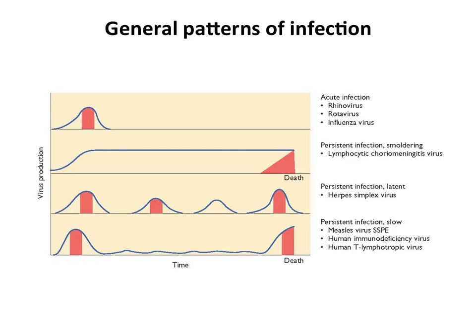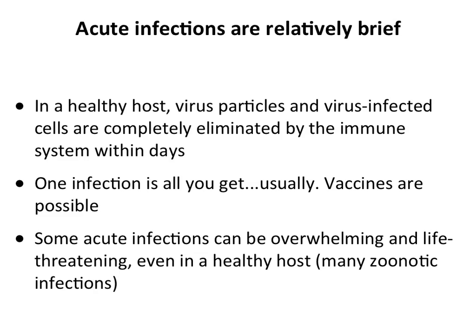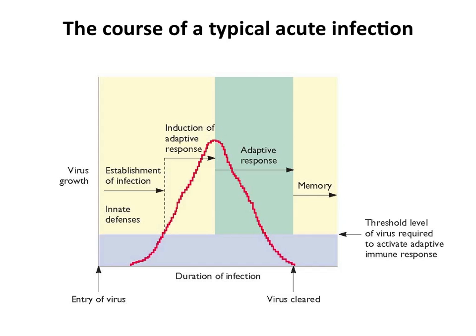Acute infections are typically brief — the infection is eliminated within days or sometimes weeks. Most of them are very short. You usually get one infection, and therefore vaccination against these kinds of acute infections is possible. However, if you aren't healthy, or even if you are, some acute infections can really overwhelm your immune system — like zoonotic infections, viruses that go from animals to people that are not well adapted to people. They can cause a lot of death.